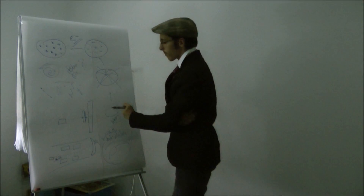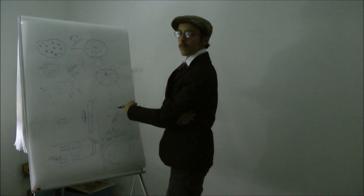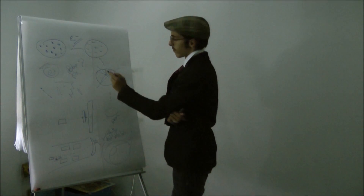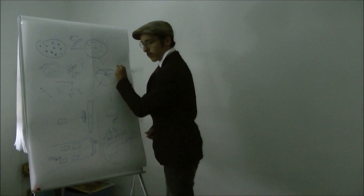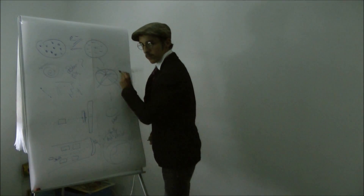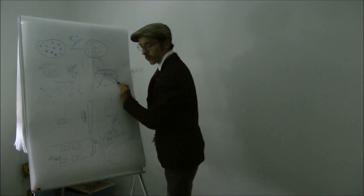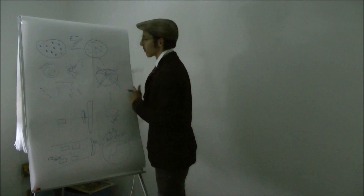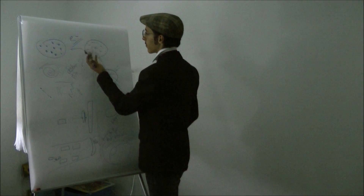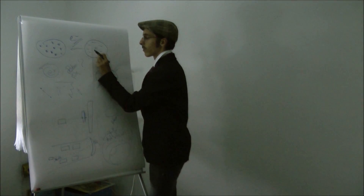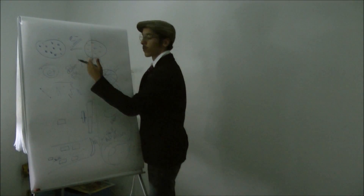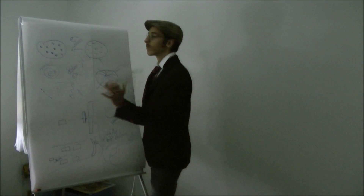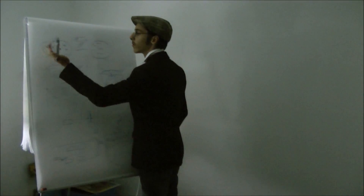Er nahm an, dass es im Atom verteilt negative Ladungsträger geben müsse, die sich in der positiv geladenen Hülle befanden. Nun stellte man sich das Atom wie ein Rosinenbrötchen vor. Das Elektron und somit das erste Elementarteilchen war entdeckt.